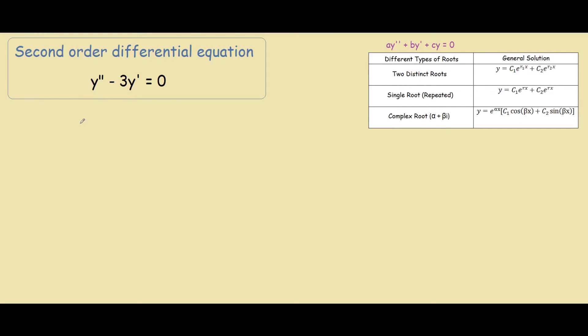Our first step is to change it into its characteristic form, which is m squared minus 3m equals to zero.